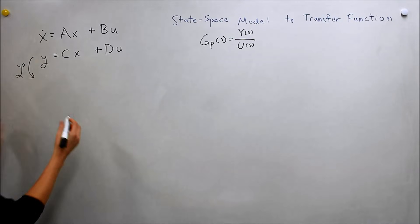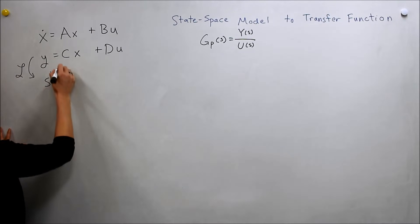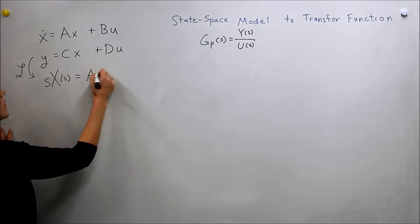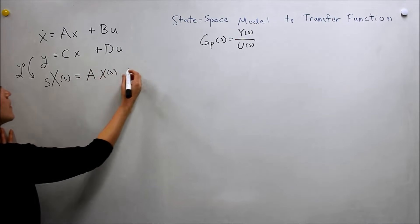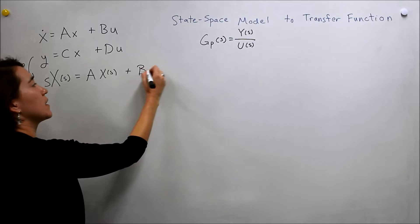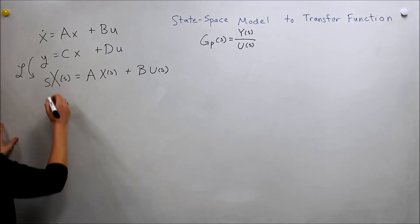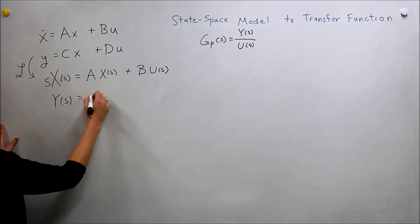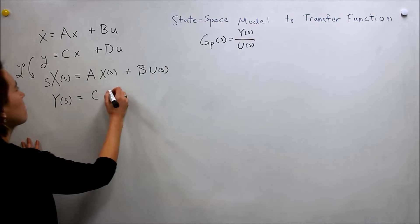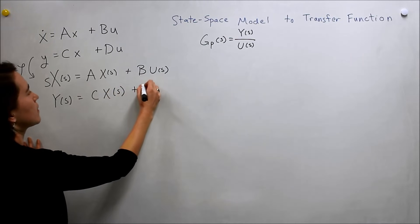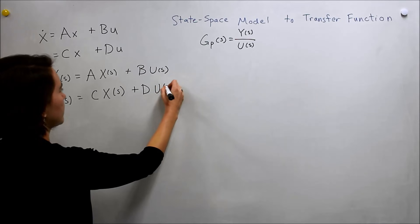Okay, so we have one derivative, so we get s, x of s, and then a, x of s, b, u of s. Take the transfer of the y and do it here. y of s equals c, x of s plus du of s.